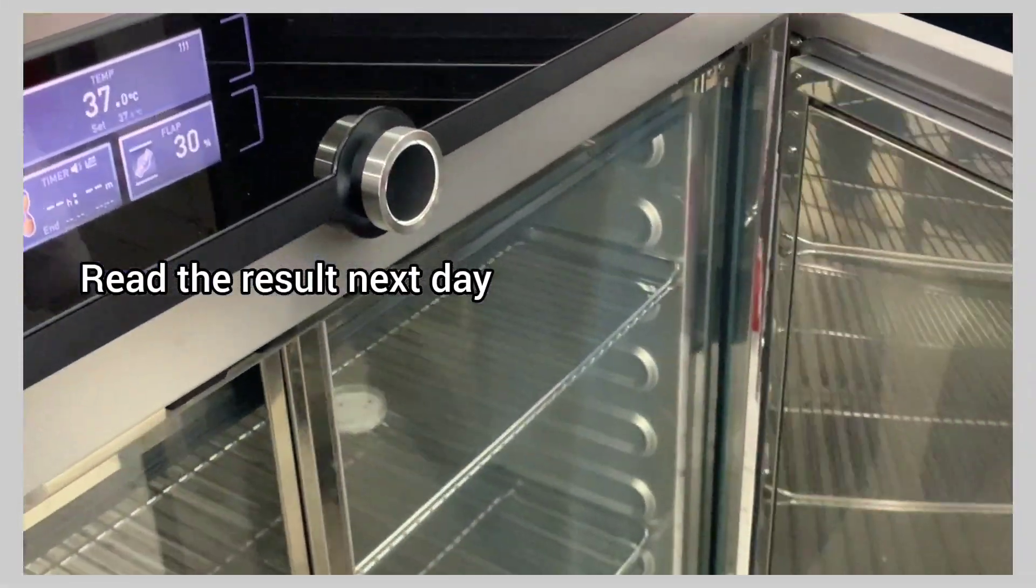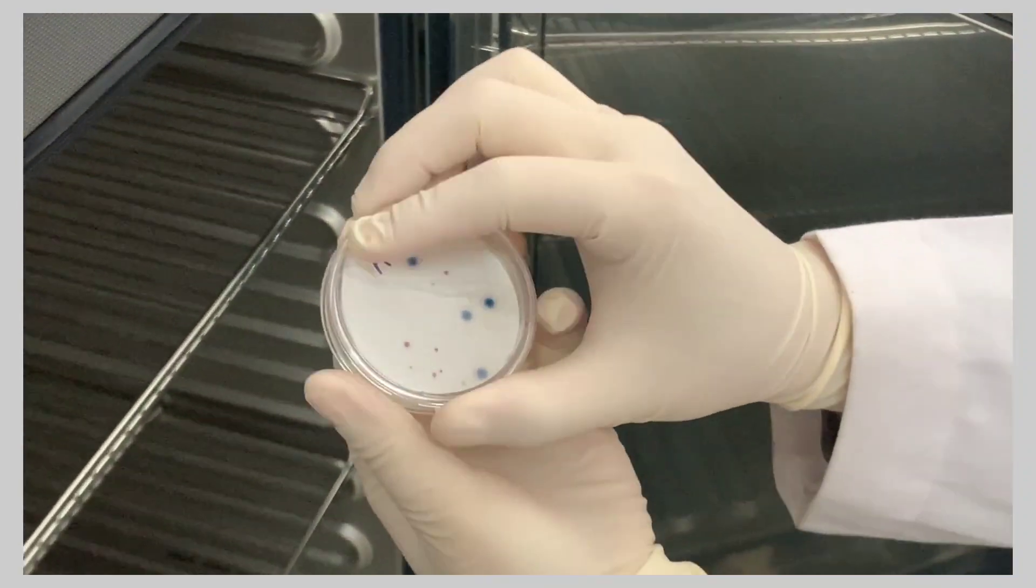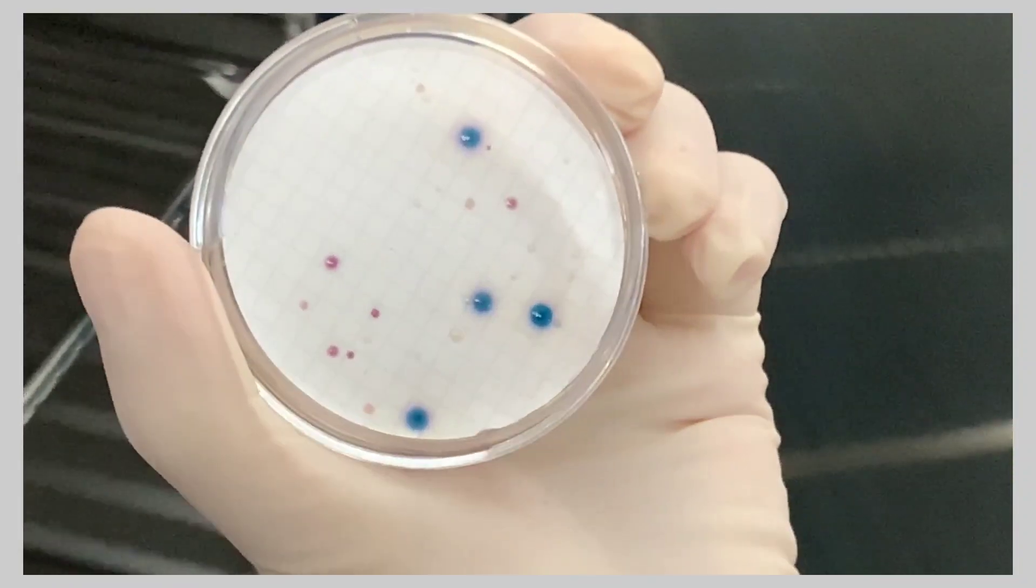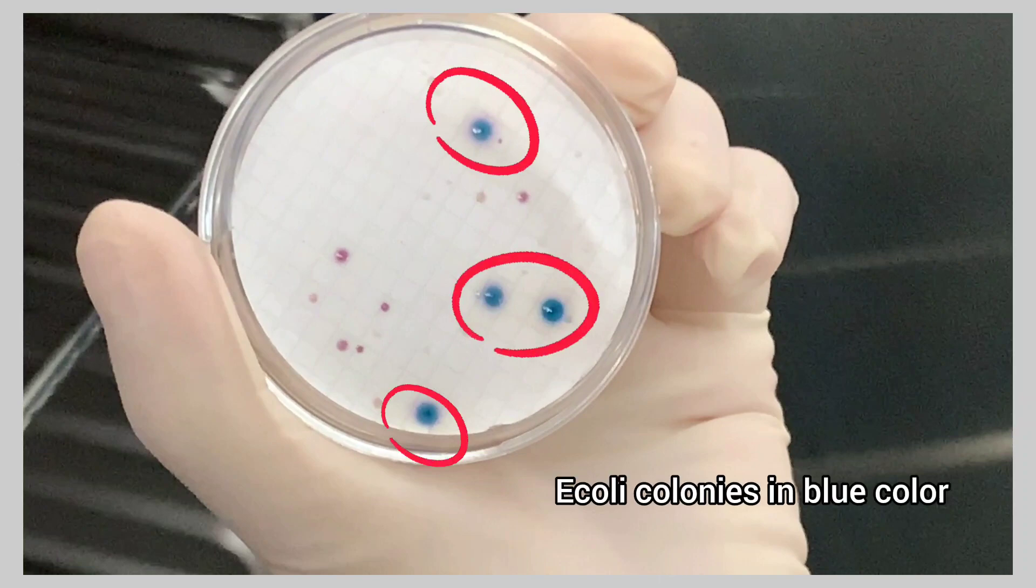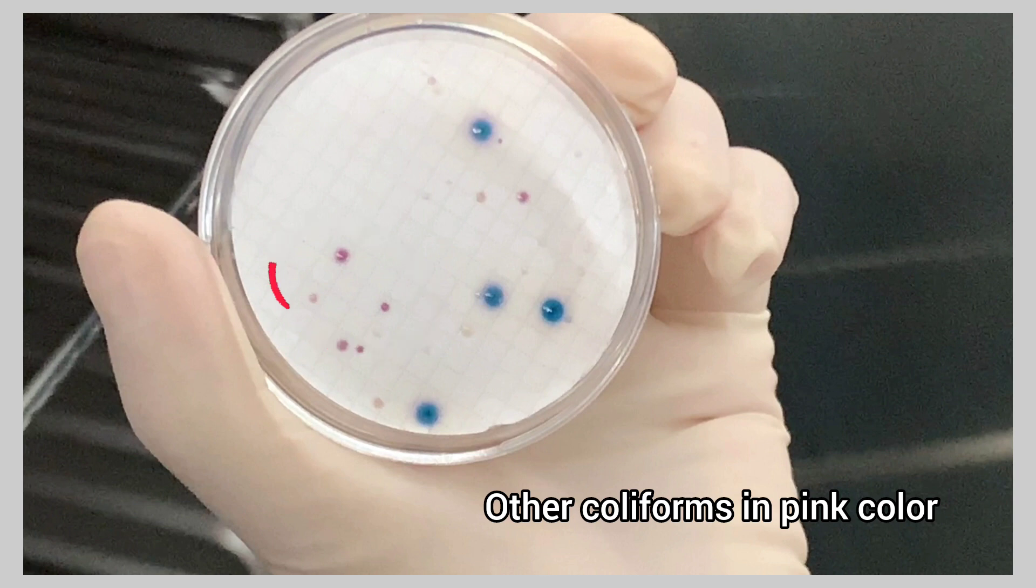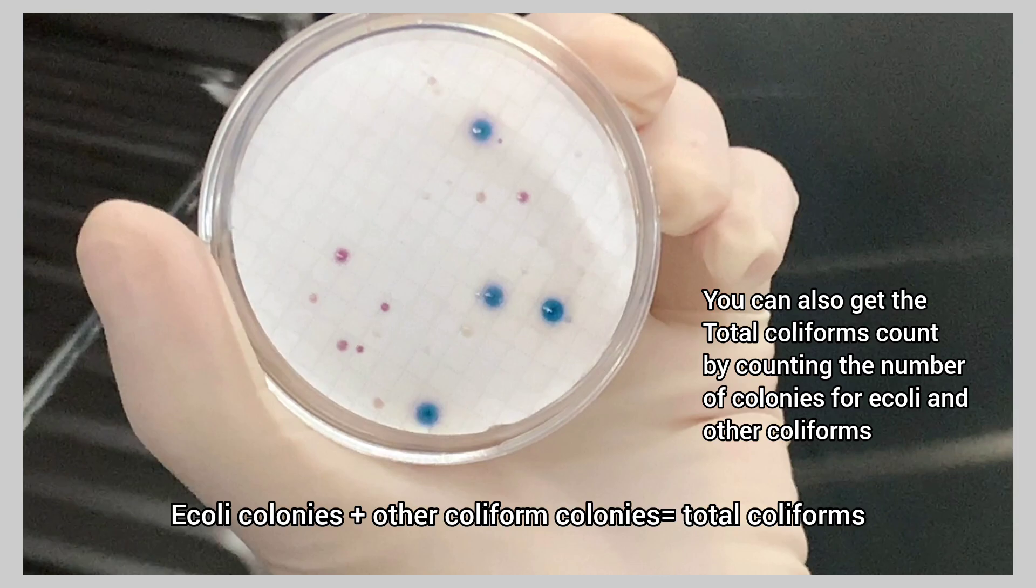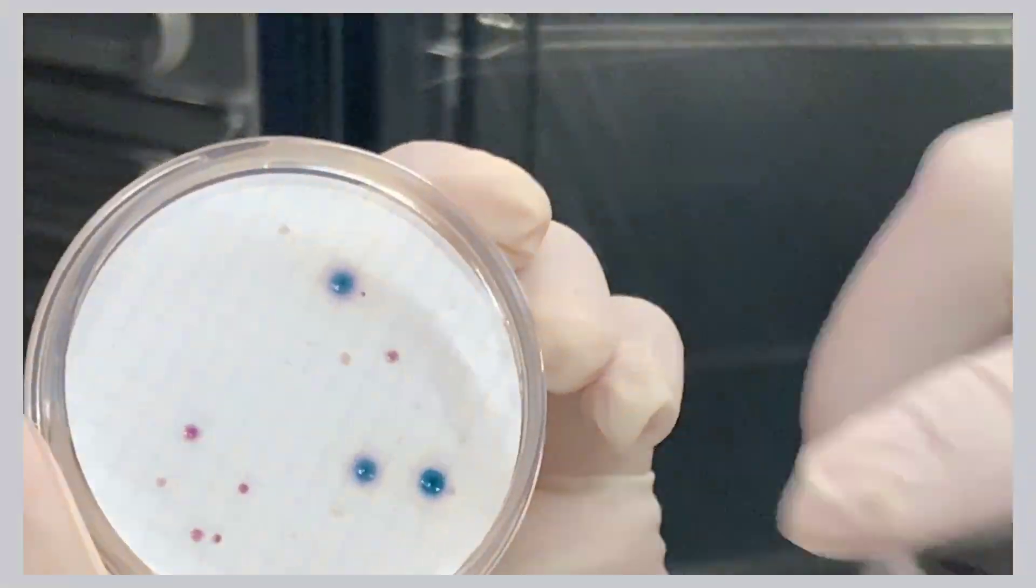Read the result next day. E.coli colonies are in blue color and other coliforms are in pink color. You can also get the total coliforms count by counting the number of colonies for E.coli and other coliforms.